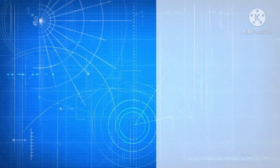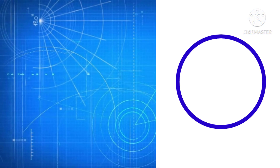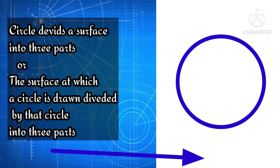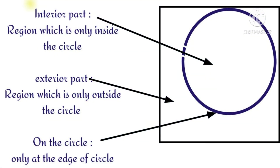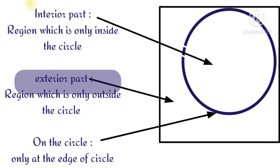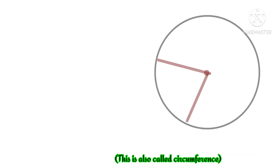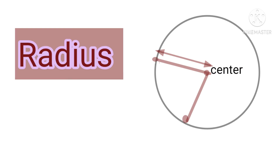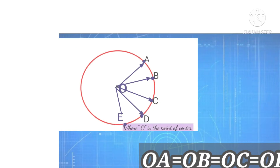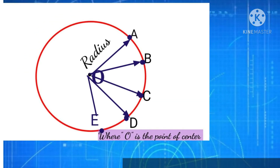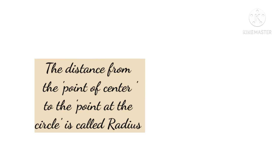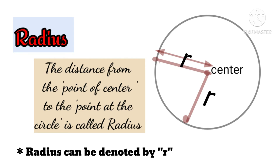Now let's move towards some more terms related to a circle. A circle divides the surface or plane into three parts: the interior part, the exterior part, and on the circle itself. The internal part is called the interior, and the external part is called the exterior. In the interior part of the circle, there are many terms we have to study. The first is radius — the distance between the center and a point on the circle is called the radius, denoted by r.